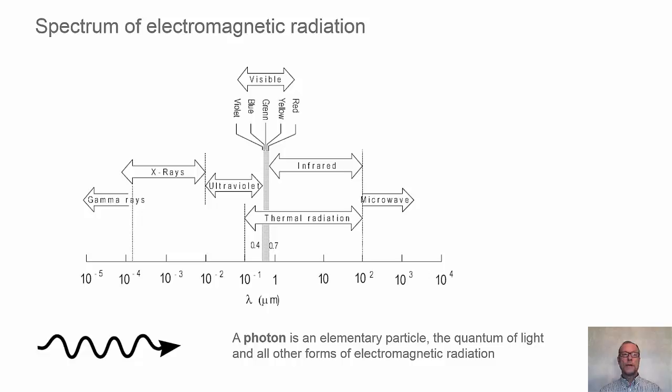Here we see the whole spectrum of electromagnetic radiation, and on the horizontal axis we have the wavelength, lambda, with the unit of micrometer, ten to the minus six meters.